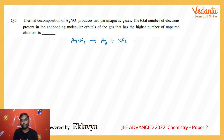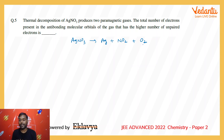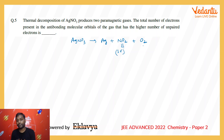Of course, both NO₂ and O₂ are paramagnetic. The paramagnetism of O₂ can be explained by MOT. NO₂ has one unpaired electron, while O₂ has two electrons unpaired.